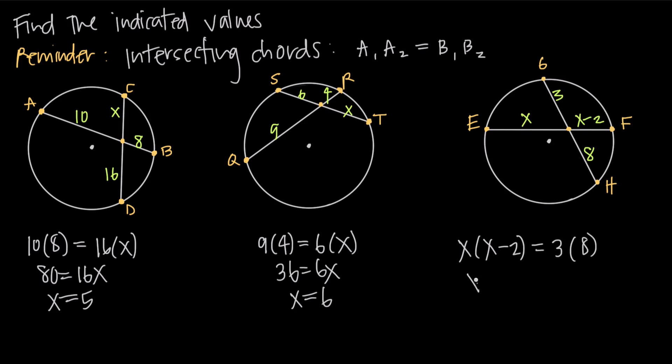When I multiply out here, I'm going to get x squared minus 2x is equal to 24. If I subtract 24 from both sides, I'm going to get x squared minus 2x minus 24 is equal to 0. Now I can go ahead and factor the left-hand side. So I'm going to get x minus 6 times x plus 4 when I factor.